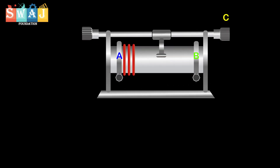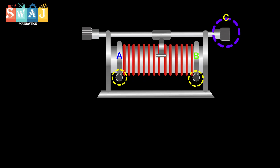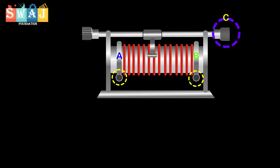A rheostat is a wire-wound variable resistance. It consists of a bare manganin wire wound over an insulating cylinder. The ends of the wire are connected to two fixed terminals A and B. A third terminal C is attached to a sliding contact which can be moved over the wire.